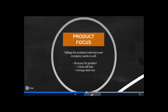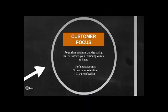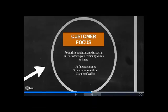The next sales objective was product focus, described as selling the products or services that your company wants to sell. This may include revenue by product, cross-sell rate and average deal size as a way of measuring this objective. The final one in the objective section is customer focus, which can be described as acquiring, retaining and growing the customers that your company wants to have. So you could look at number of new accounts, percentage of customer retention or share of wallet to examine your customer focus.